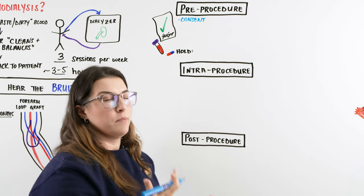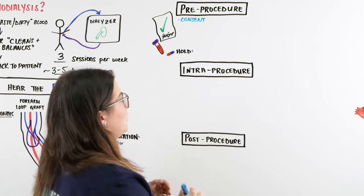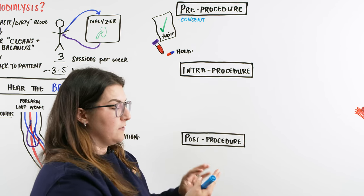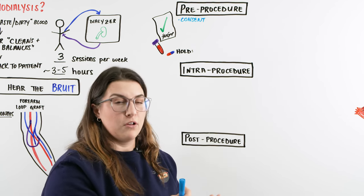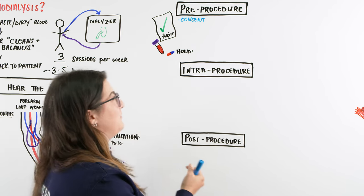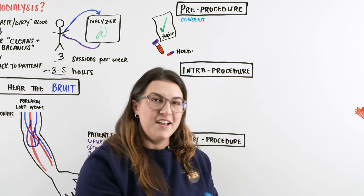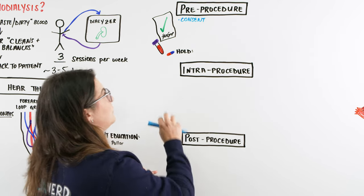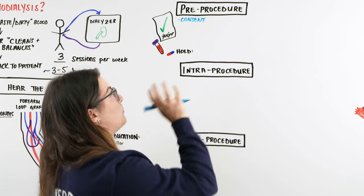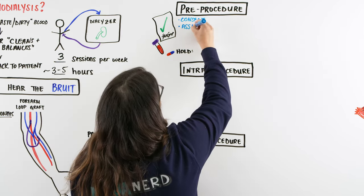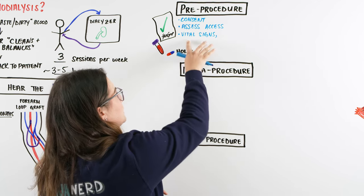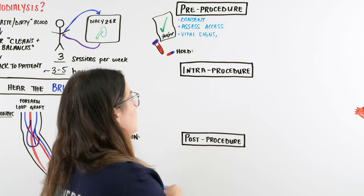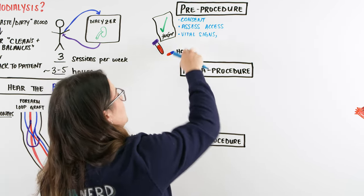Once we have consent, we proceed with pre-procedure assessment. We assess the fistula or graft to make sure it looks good, apply a limb alert bracelet to that side, assess vital signs, feel the thrill and hear the bruit on the fistula, and check pulses, pain, tingling, and capillary refill to confirm the fistula is working properly and the patient is ready for dialysis.